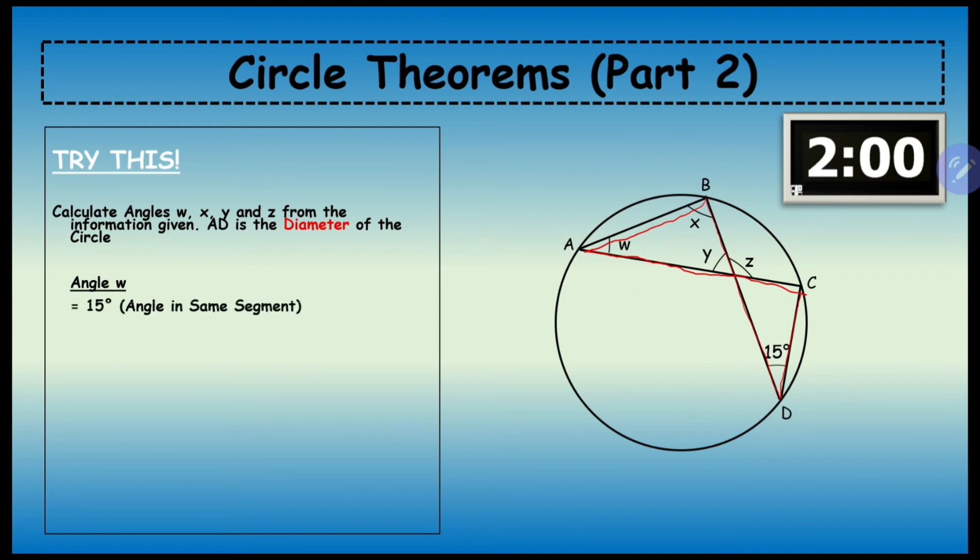Now angle x is 90° because of the angles in a semicircle. If you've got the two angles, you can work out y by adding them both together and taking them away from 180°. So angle y is going to be 75°.